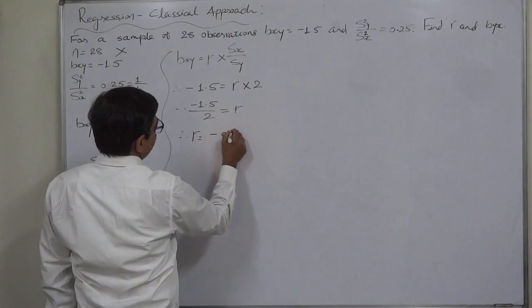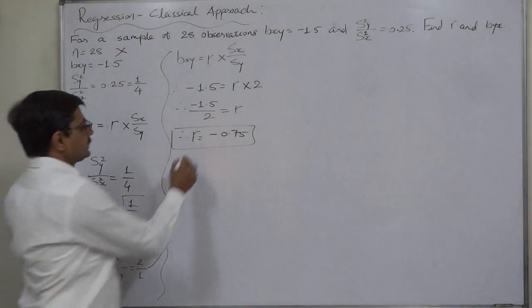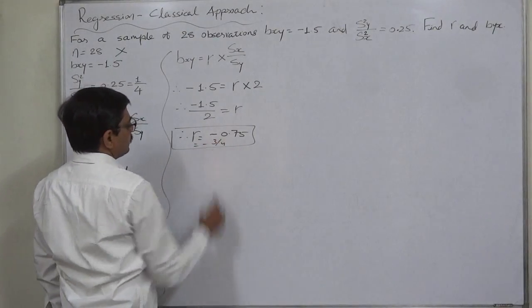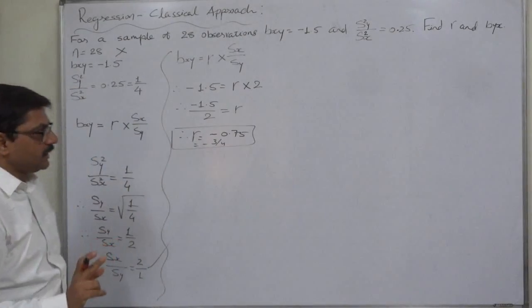So, the coefficient of correlation is minus 0.75 or minus 3 by 4. So, we have now coefficient of correlation.